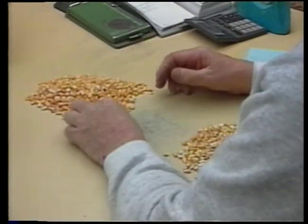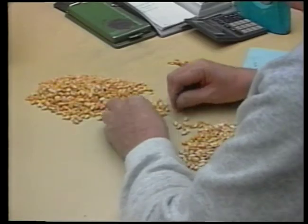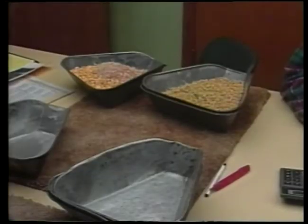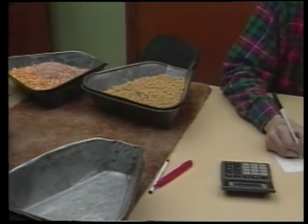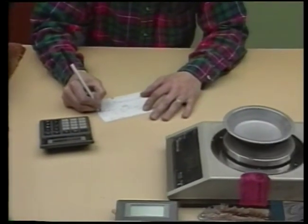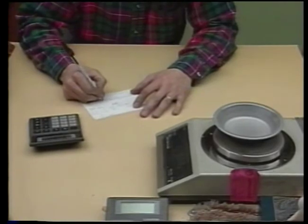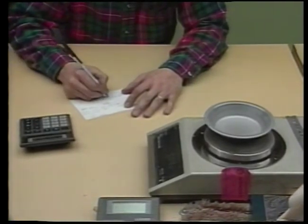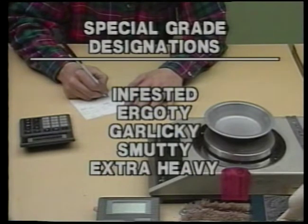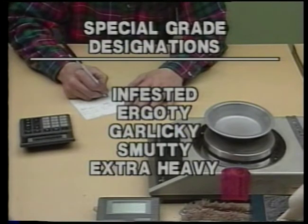Grain samples are also examined to see if any special grade designations apply. Special grade designations do not influence the numerical grade, but are noted on the grain grading ticket and further indicate desirable or undesirable grain characteristics. Terms such as infested, ergotty, garlicky, smutty, and extra heavy are examples of special grade designations. The procedures and requirements for special grade designations vary for different crops.